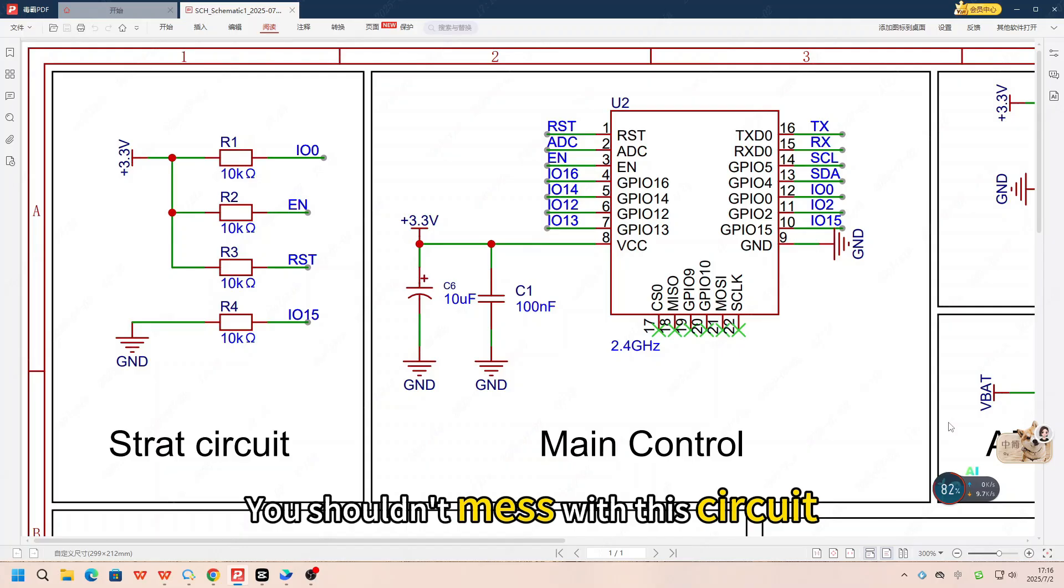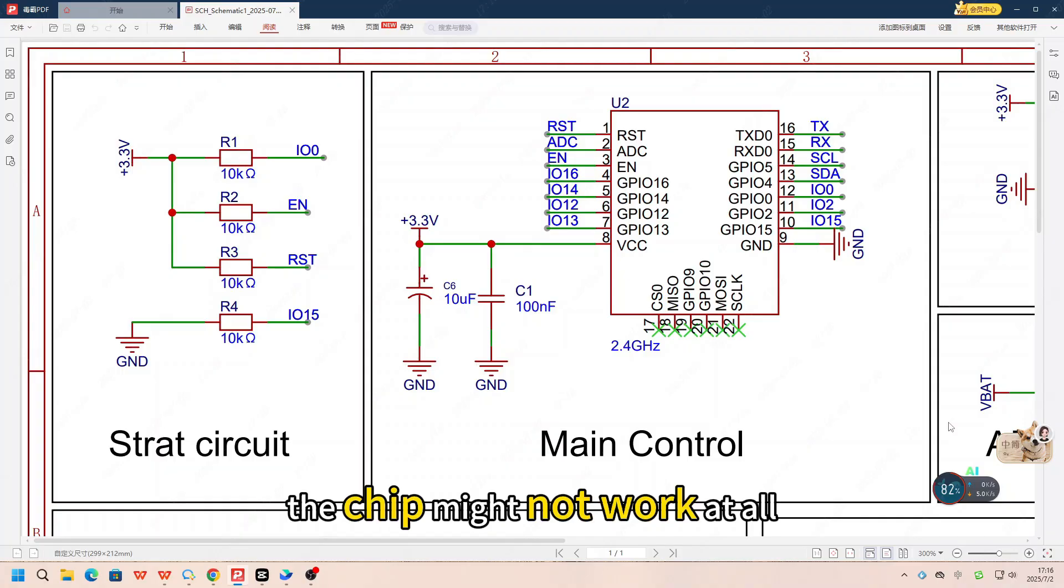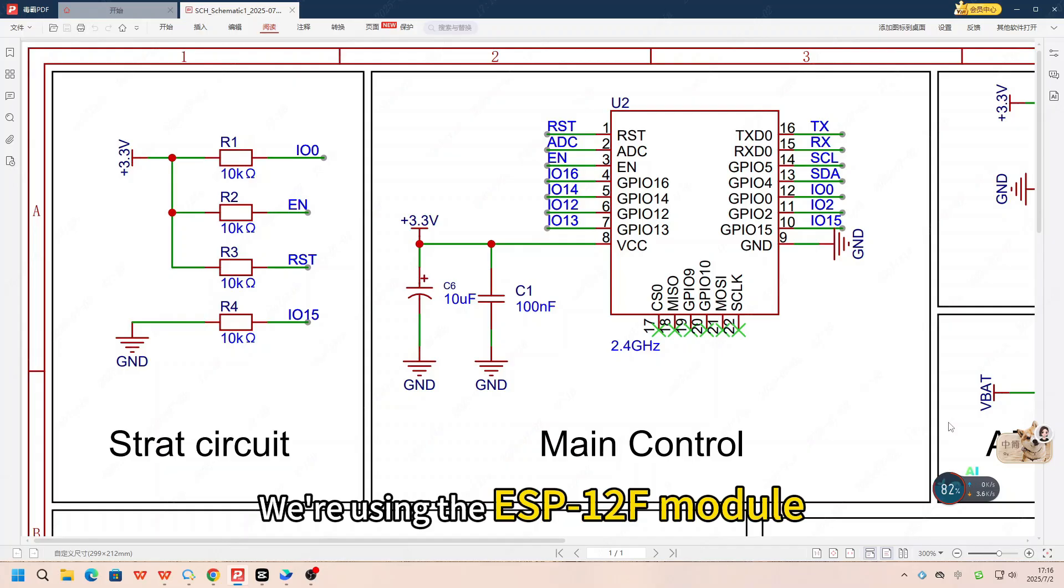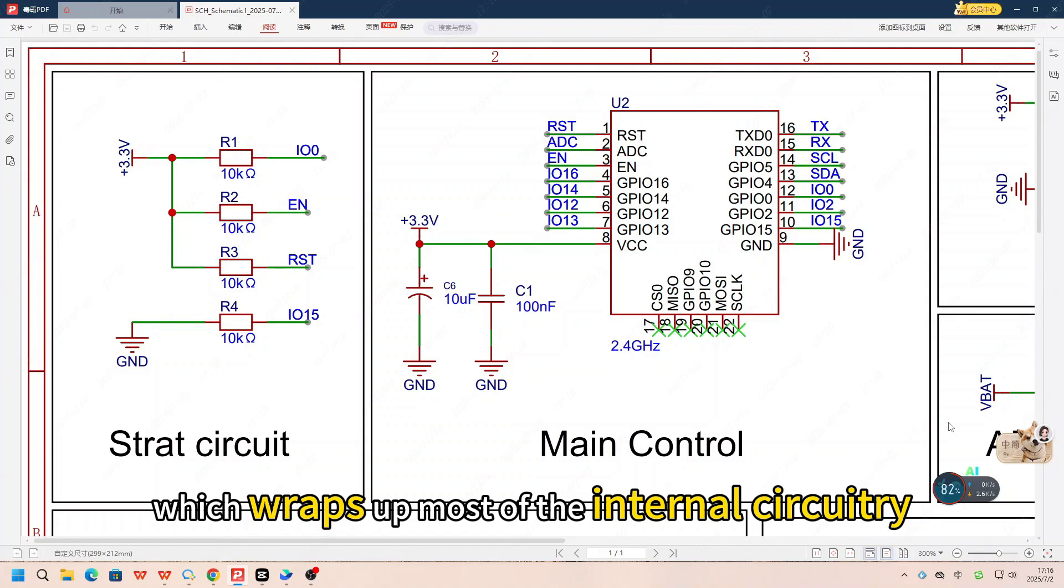You shouldn't mess with this circuit. For example, if you pull EN low, the chip might not work at all. Next, is the main controller, the ESP8266. We are using the ESP12F module, which wraps up most of the internal circuitry.